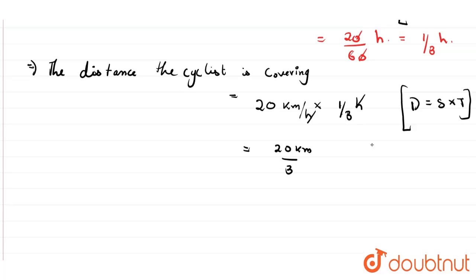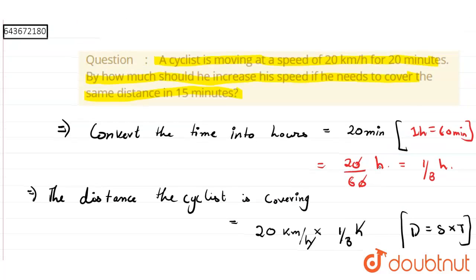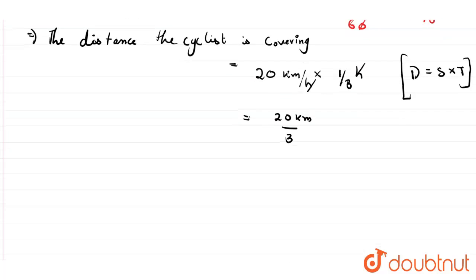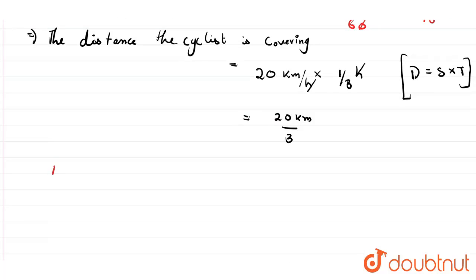Now, by how much should he increase his speed if he needs to cover the same distance in 15 minutes? So first we will convert 15 minutes also. 15 minutes equals 15 divided by 60 hours, that is 1/4 hour.